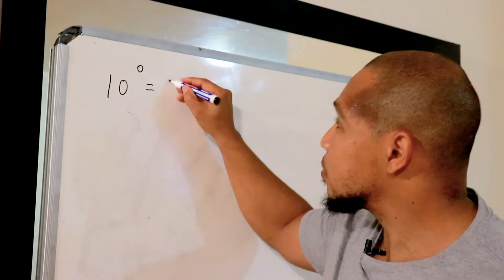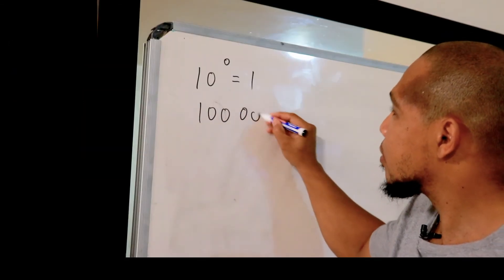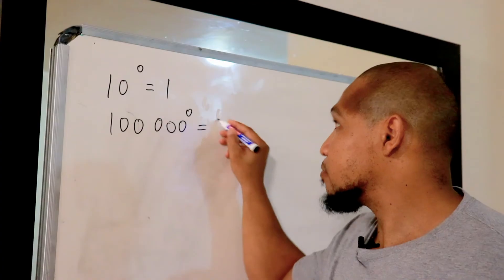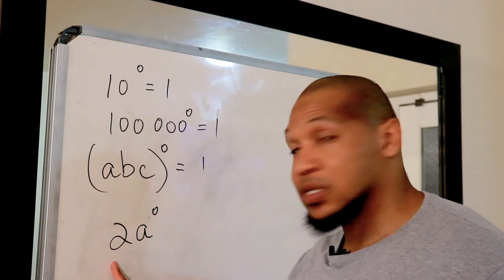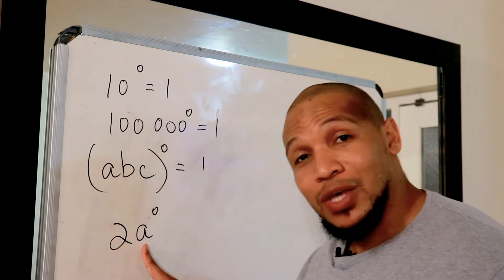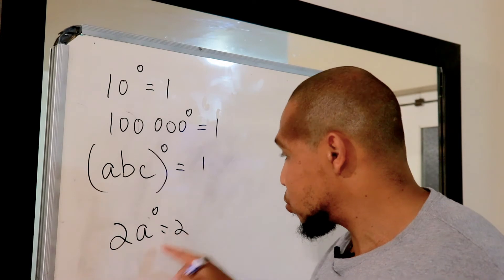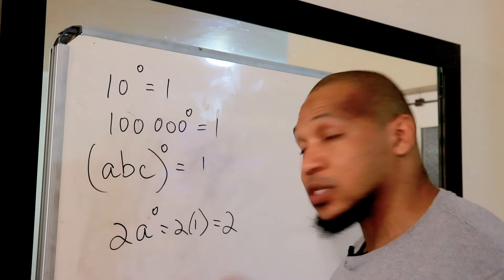One more thing to remember: anything to the power of zero equals one. Ten to the power of zero is one. A hundred thousand to the power of zero is one. ABC to the power of zero is equal to one. But we mustn't confuse this — if the zero exponent is only applicable to the 'a' in an expression like 2a⁰, then a to the power of zero is one, and the answer is equal to two.